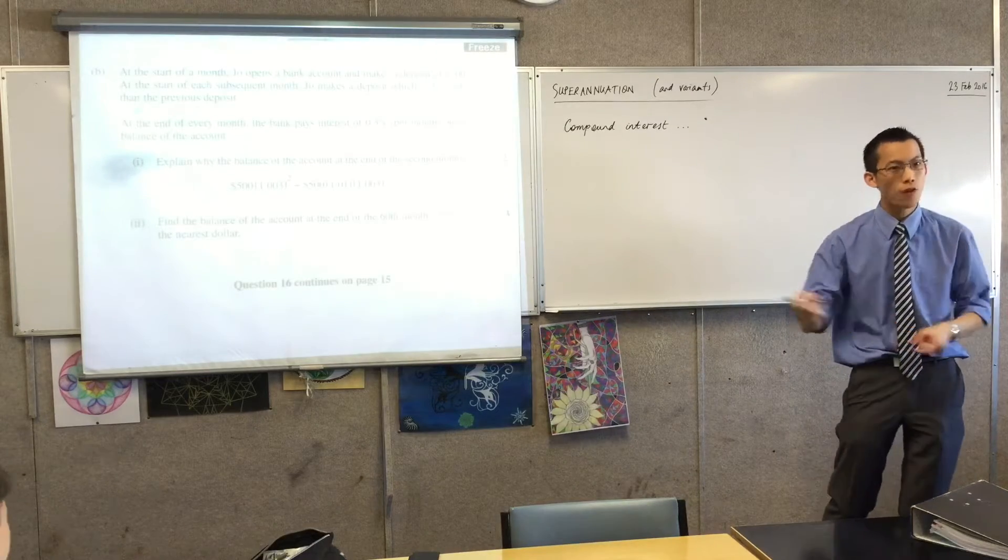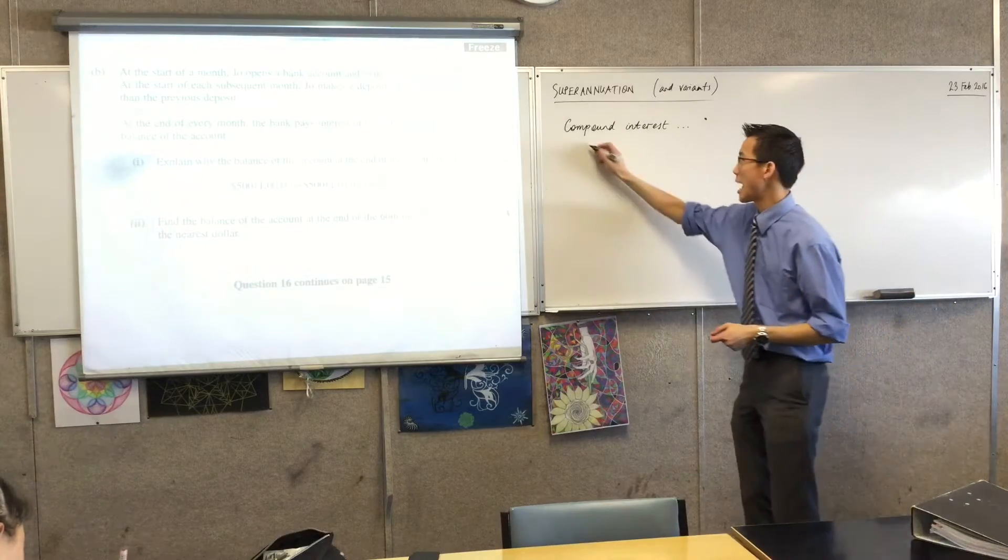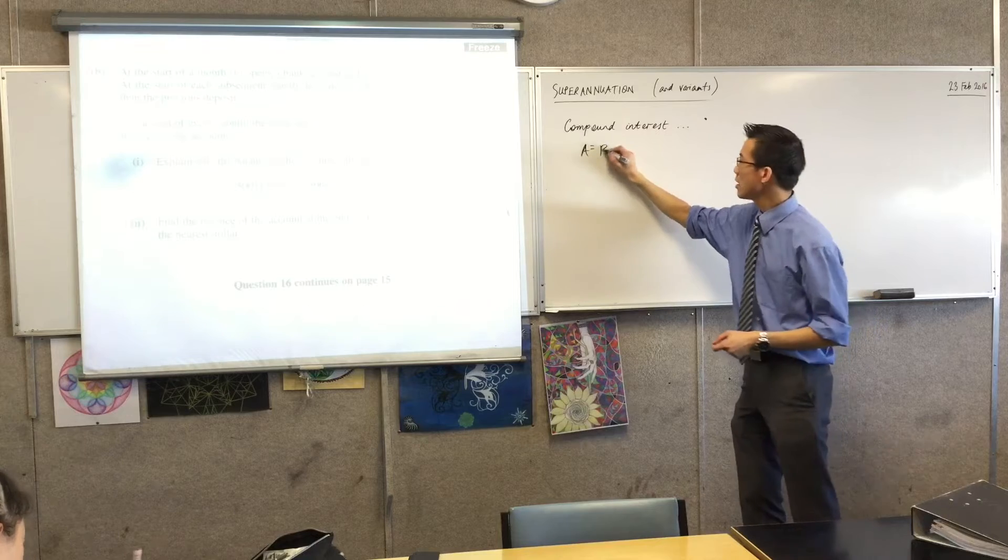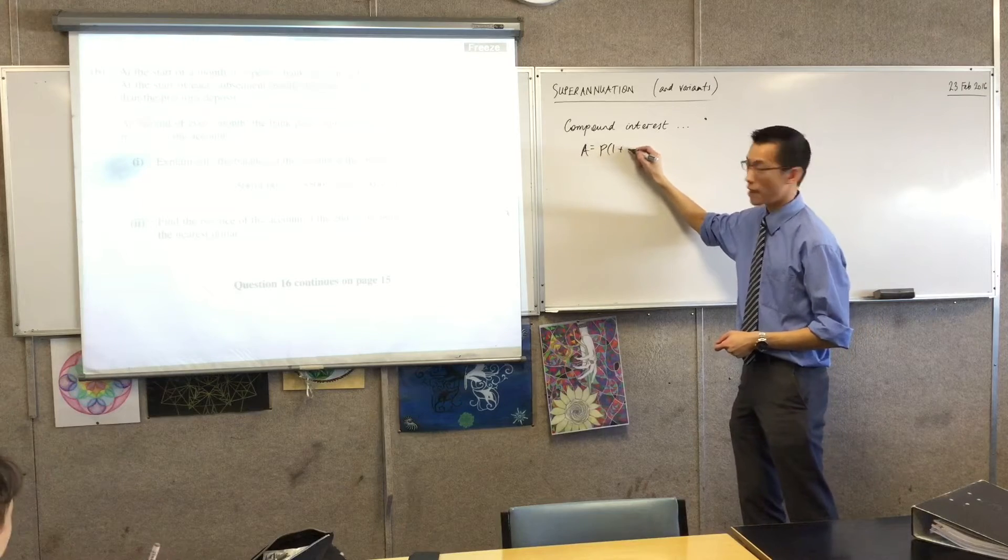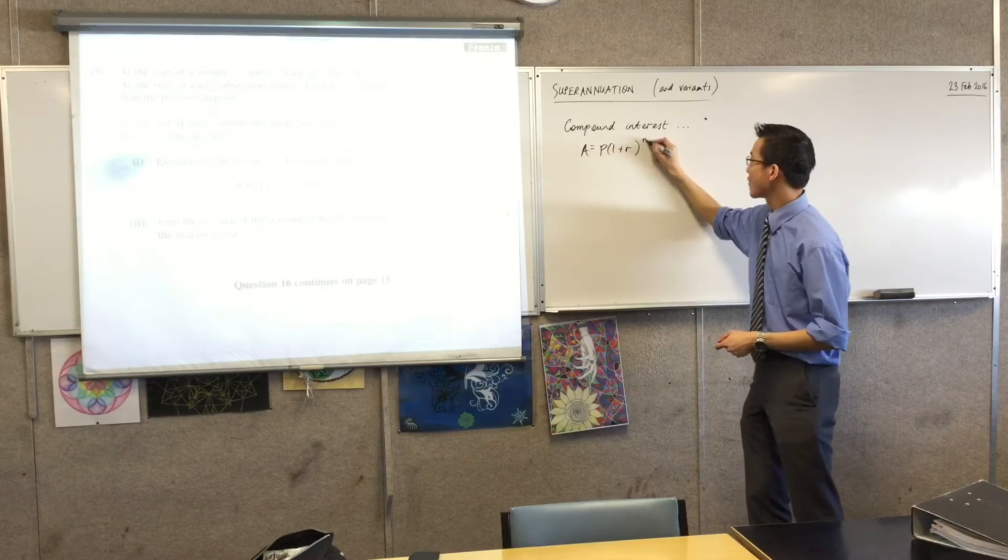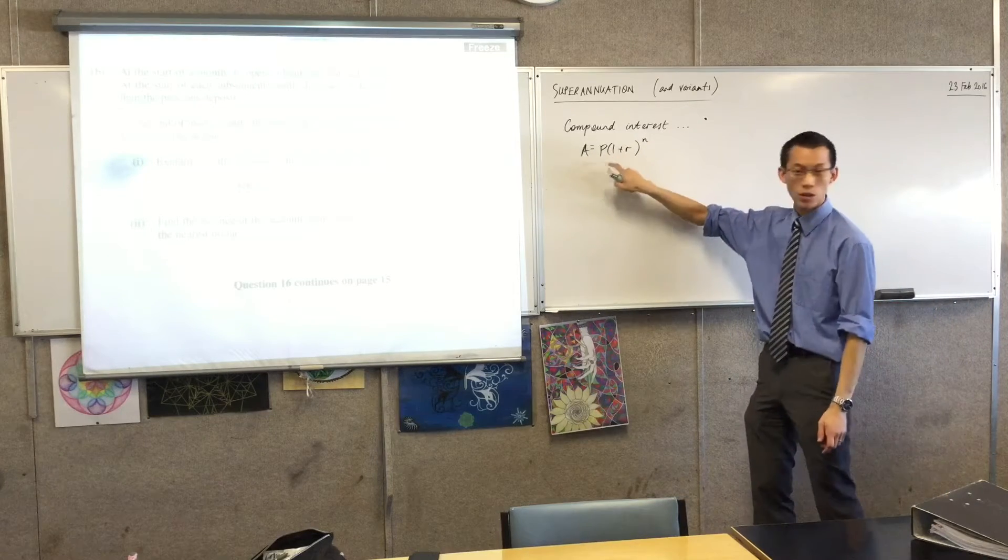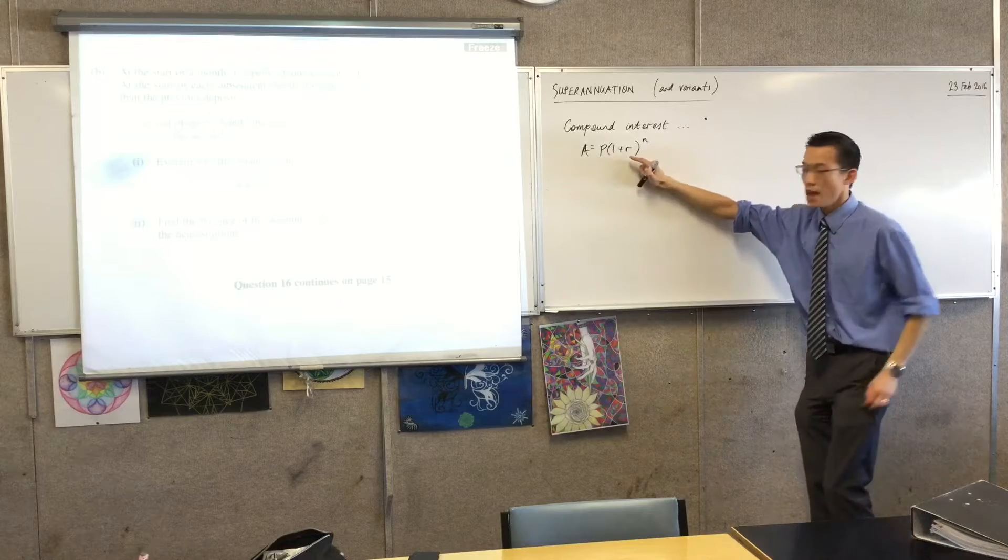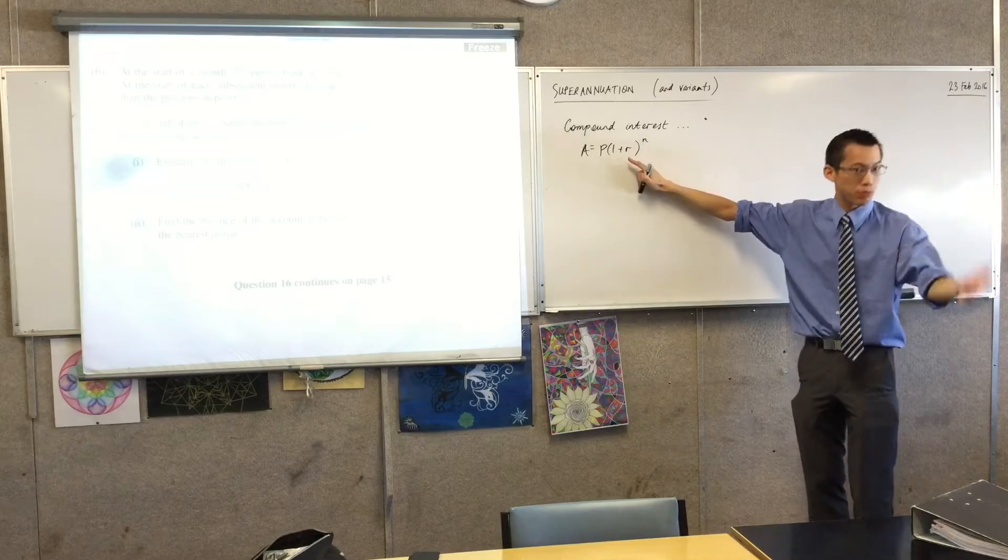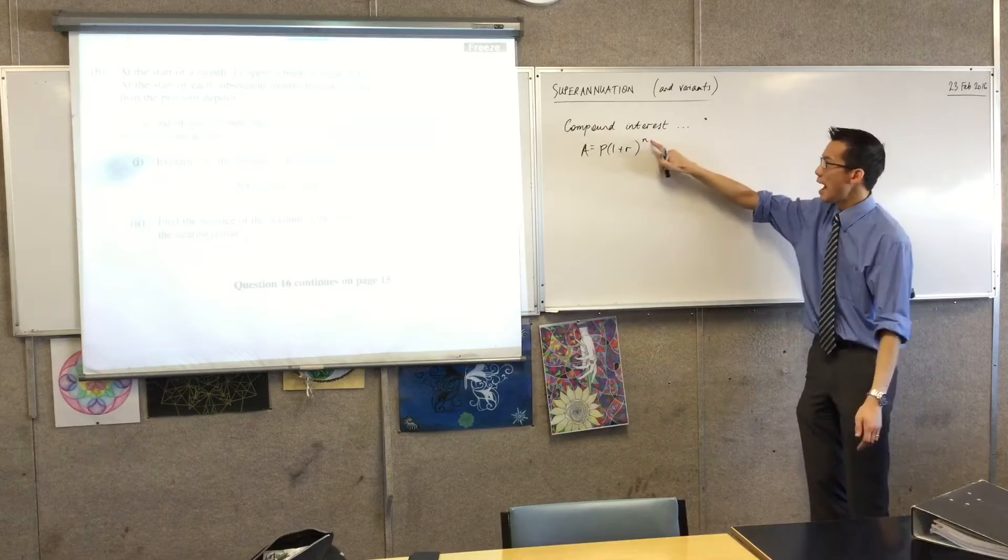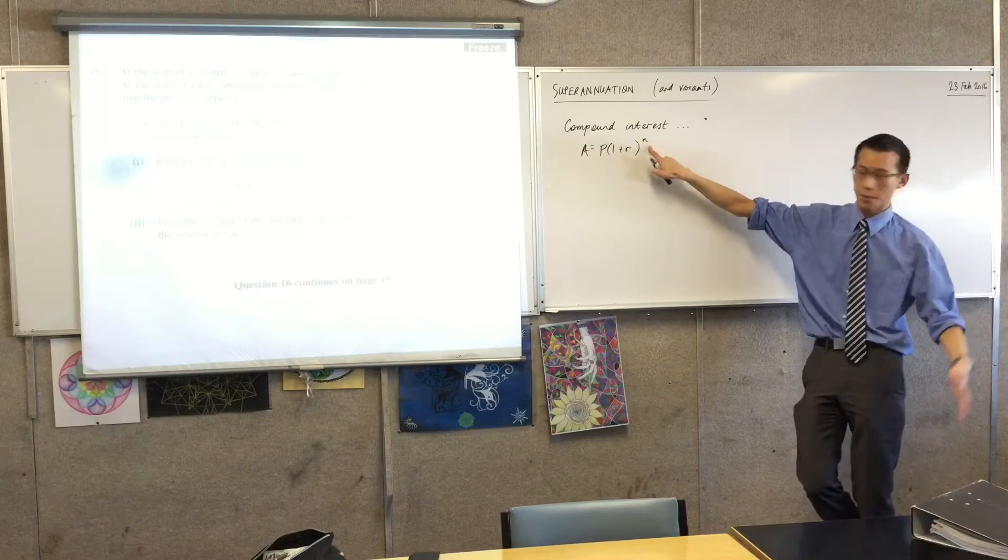So let's just quickly get this down. Compound interest, what is the formula for compound interest? Starts with an A. P times 1 plus... Very good. So this is a simple idea. You've got some amount that you start with, which we call the principal. You have some interest rate that gets applied to that, added on repeatedly, and then you do that however many times.